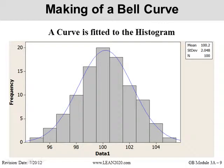Here's that same histogram with a fitted bell curve in there. This is an output from Minitab software, which you'll be exposed to more at the green belt level. If you look at the top right, this shows us our average — our mean of 100.2. It gives us a standard deviation of approximately two, and n is our sample size. We took 20 data points for five days — that's the n of 100.